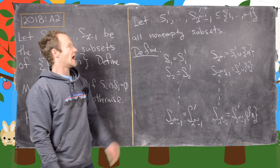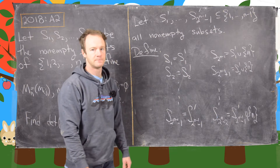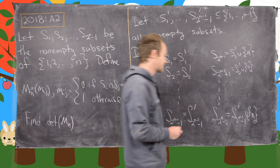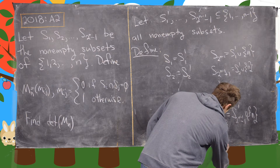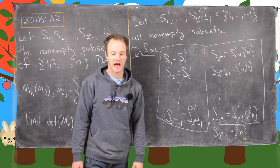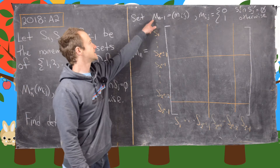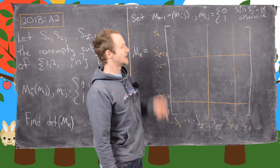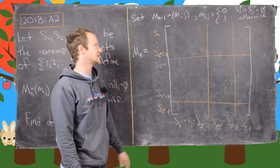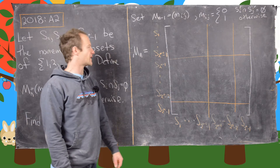Recalling our three types: subsets of {1,...,N-1}, non-empty subsets of {1,...,N-1} union {N}, or just {N} itself. We place that last one at the very end: S_{2^N - 1} = {N}. Now let's define the matrix MN-1 by entries m_{ij} = 0 if S'_i intersect S'_j is empty, and 1 otherwise — the same intersection rule applied to the primed subsets.